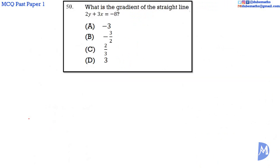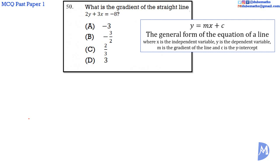Question 50. To determine the gradient of a line, we need the equation of a line to be expressed in the form y equals mx plus c. We are given that 2y plus 3x is equal to negative 8.